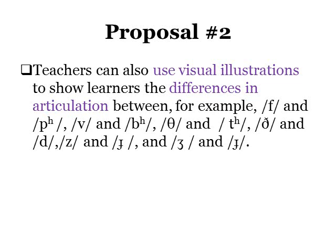Teachers can also use visual illustrations to show students the differences in articulation between different phonemes — for example, between English 'fa' and Bangla 'fa', or English 'va' and Bangla 'bha'. Such use of pictures or visual illustrations can help students perceive how those Bangla and English phonemes which sound similar but are actually different are pronounced differently, and such explicit instruction can be of much help to them.